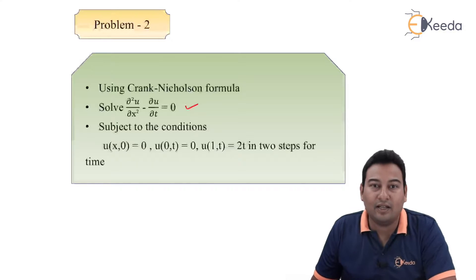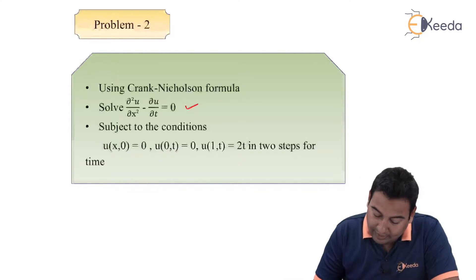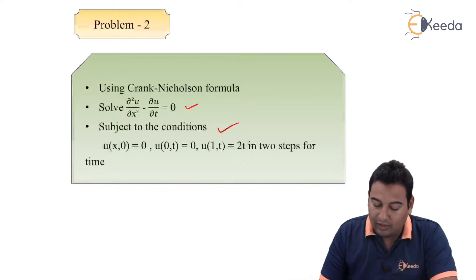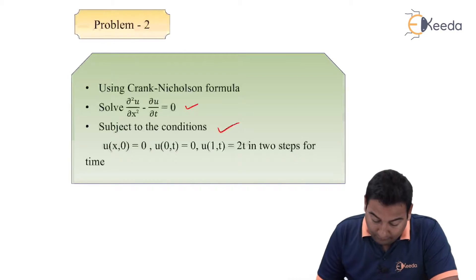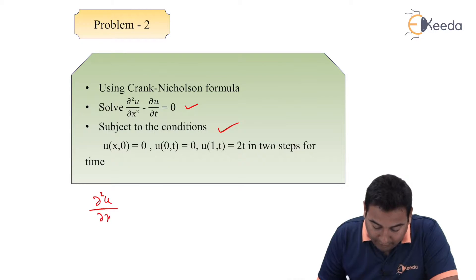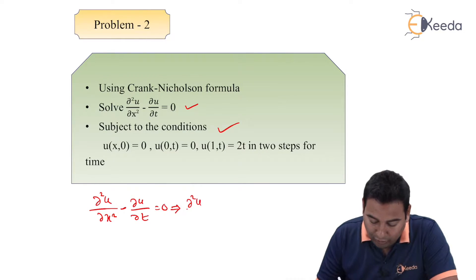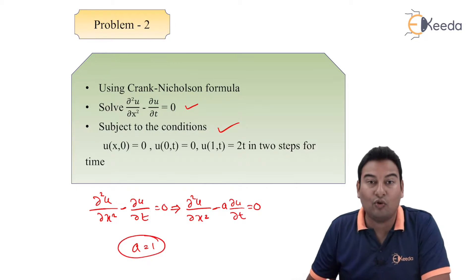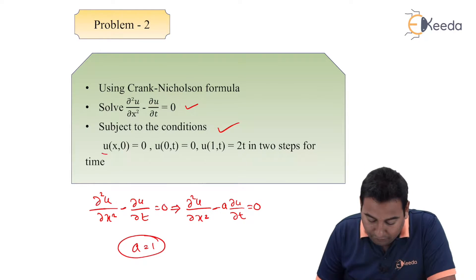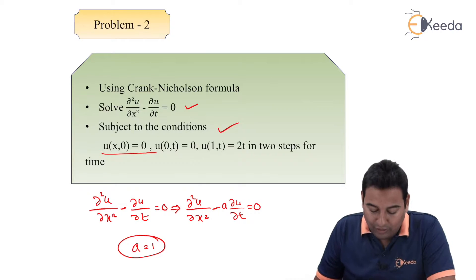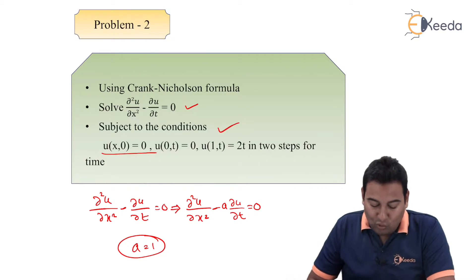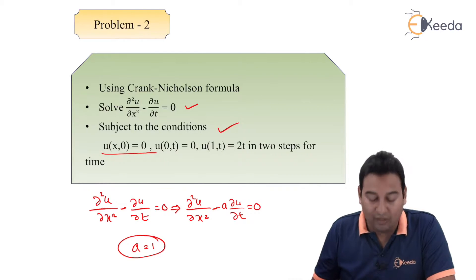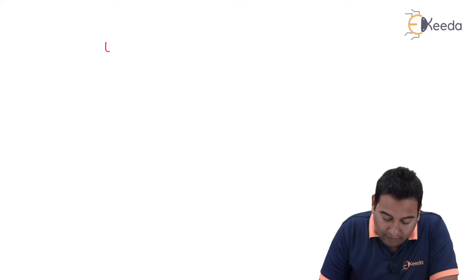This is the equation given and these are the boundary conditions provided to us in two steps for time. The first step is we need to compare this equation with the standard equation: ∂²u/∂x² minus a·∂u/∂t = 0. If we compare, we will get the value of a equal to 1.